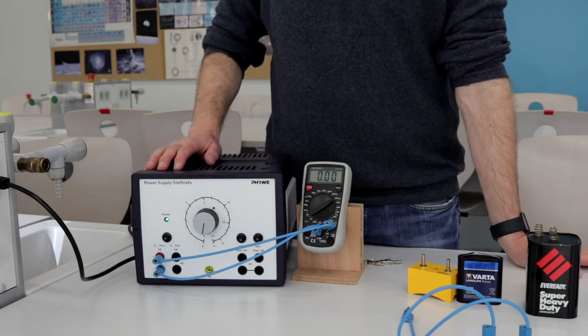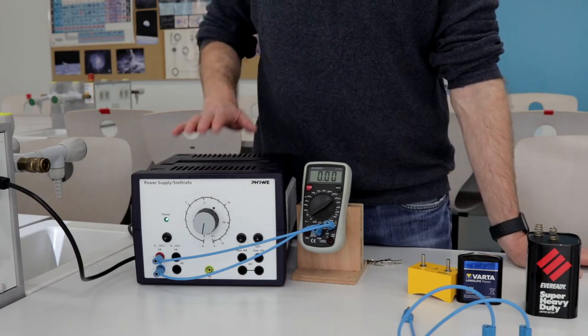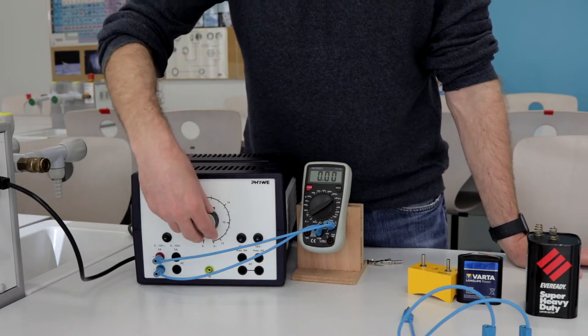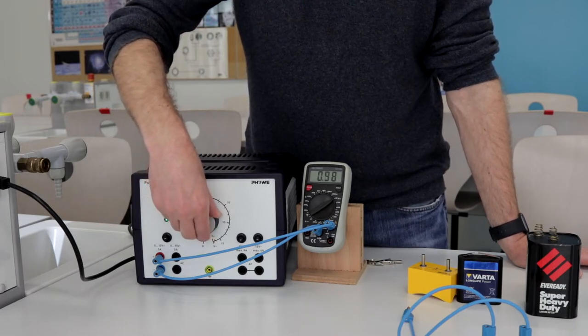Now the voltmeter is connected across the output of this variable power supply, and if we turn the knob, the voltage starts increasing.